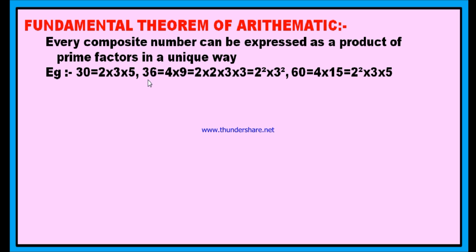Similarly, look at 36. You can write 36 as 4 into 9. This 4 is 2 into 2, and this 9 is 3 into 3. 2 into 2 is 2 square, and 3 into 3 is 3 square. Therefore, you can write 36 as 2 square into 3 square. You can write 36 as the product of prime numbers in only one way.